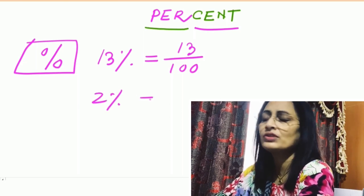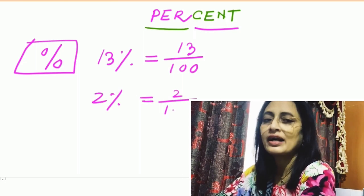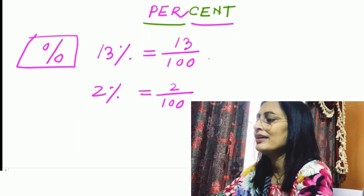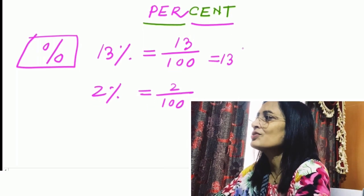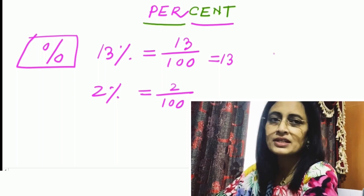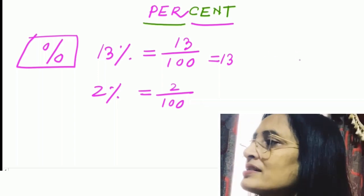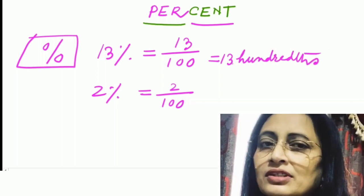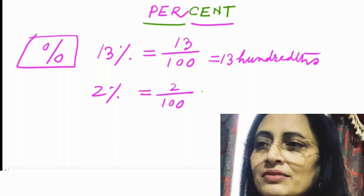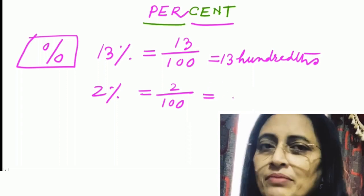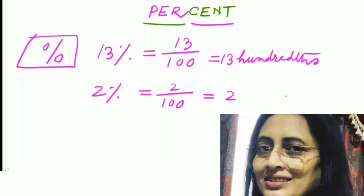We know 13 by 100 is equal to 13 hundredths, and 2 by 100 is equal to 2 hundredths. So now we'll solve the sums related to this percent, one question of each category, covering class 6 and class 7 syllabuses of both CBSE and ICSE boards. So please keep watching the sums.